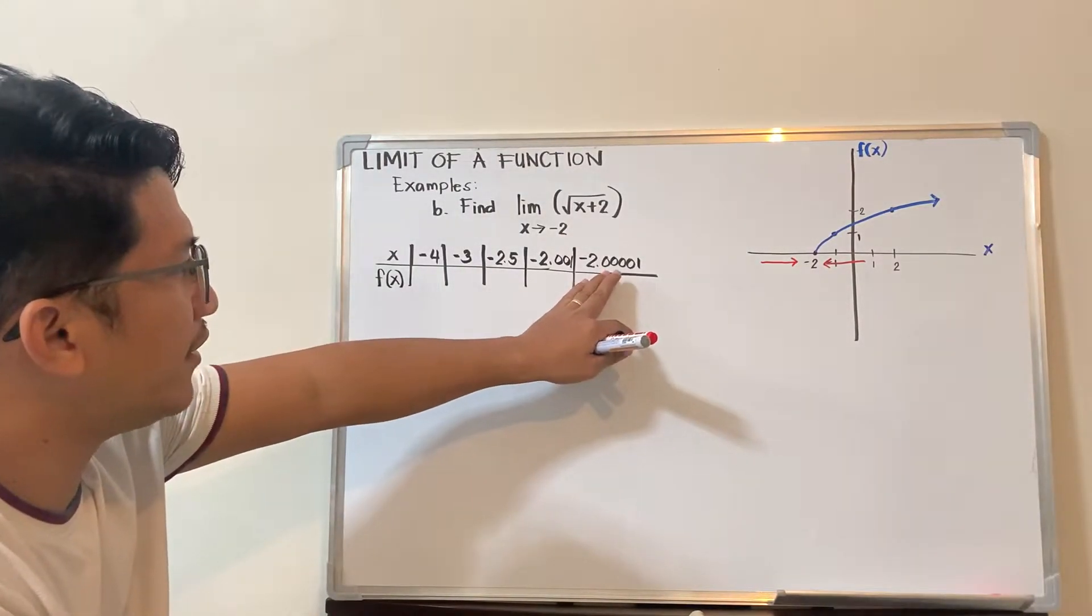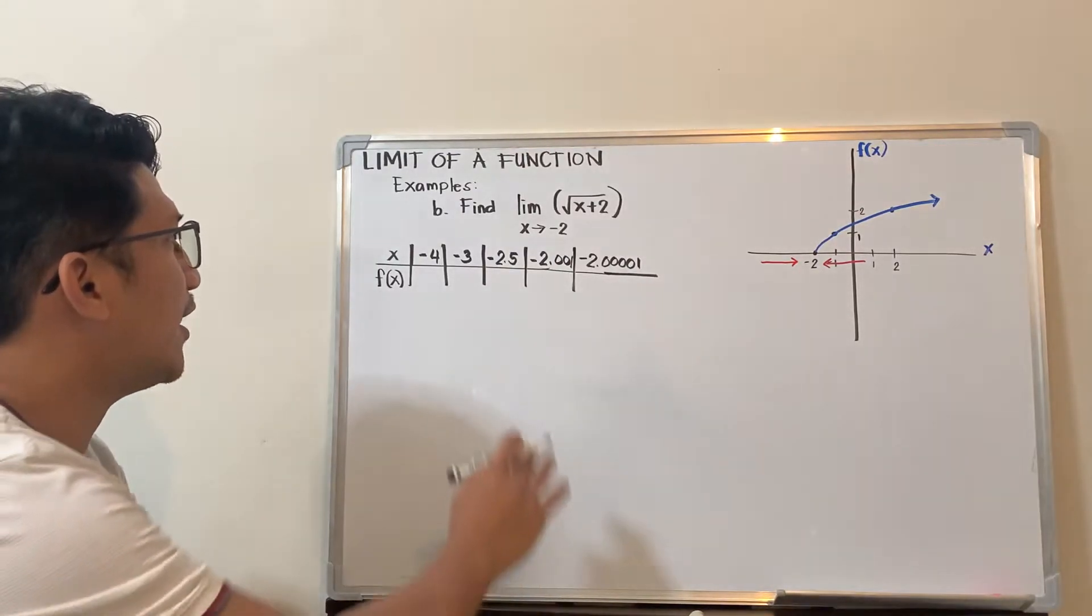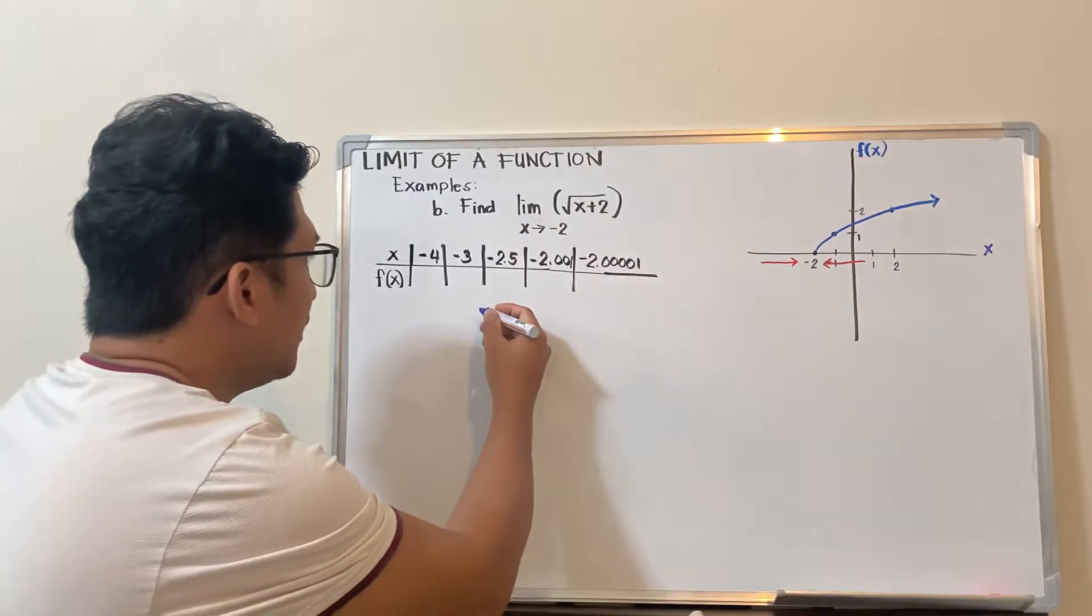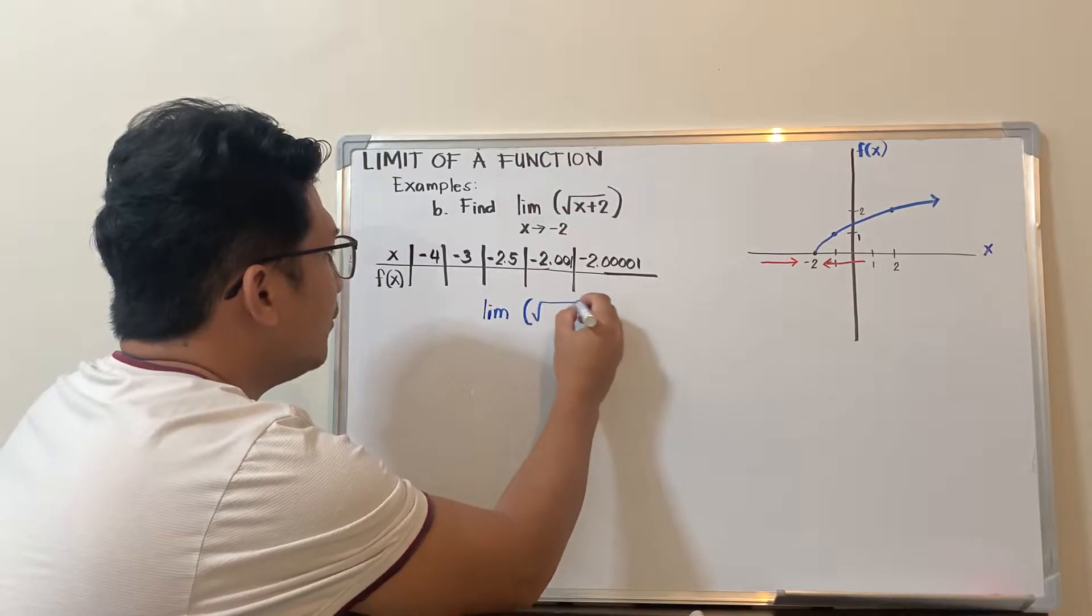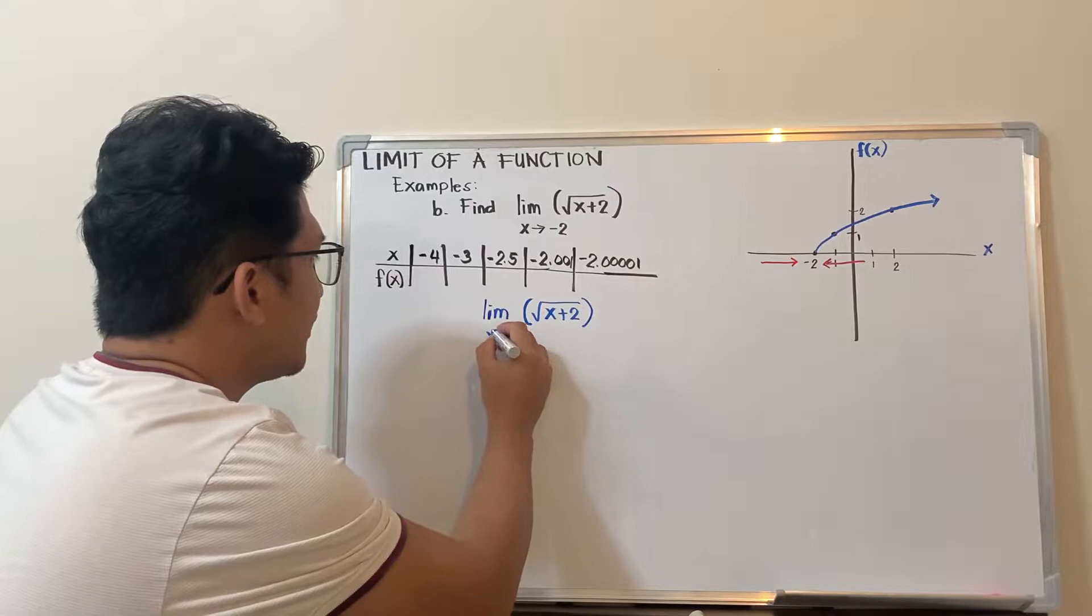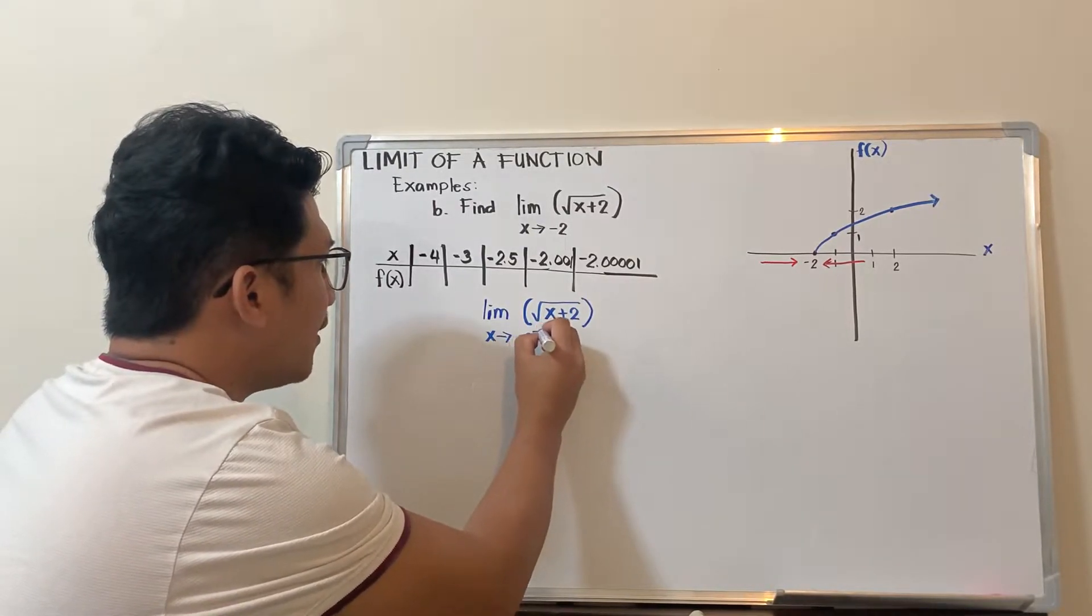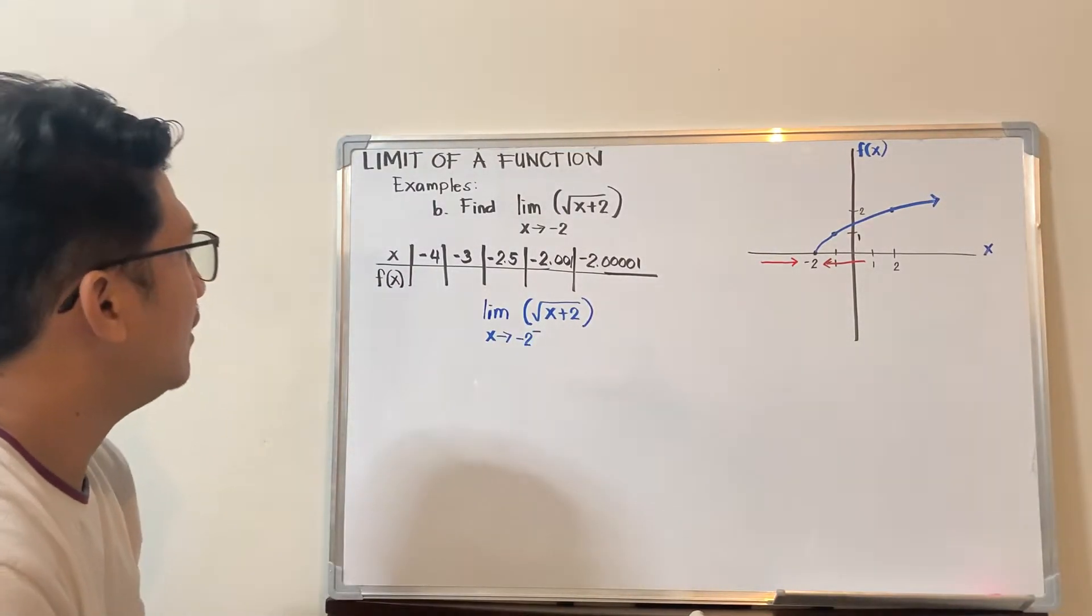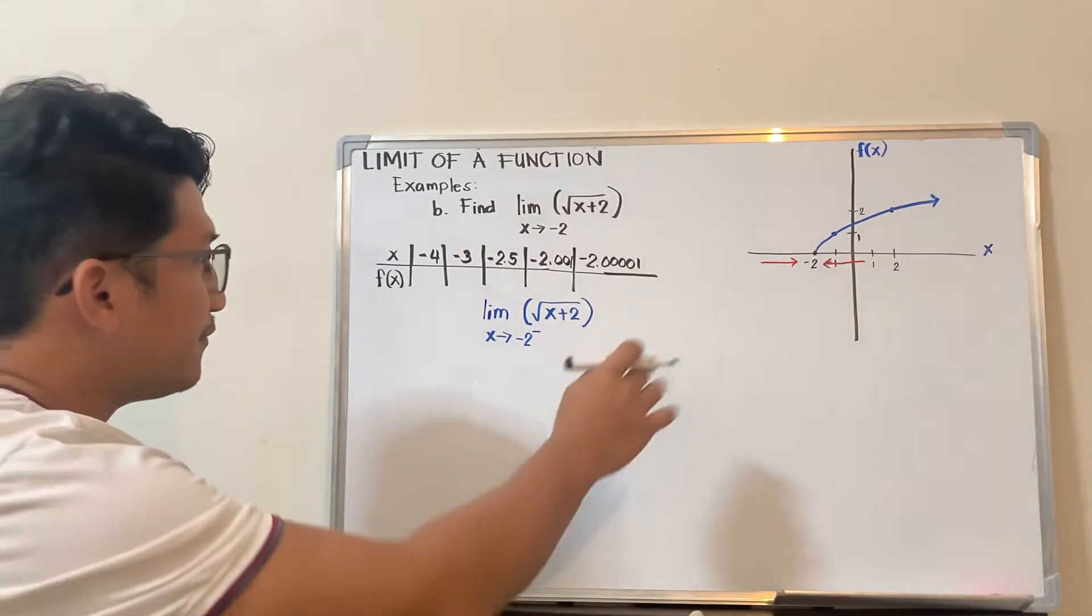Notice this number is already very close to negative 2. I am trying to evaluate the limit of the function, the limit of square root of x plus 2, as x approaches negative 2 from the left. This symbol shows the direction, coming from the left.